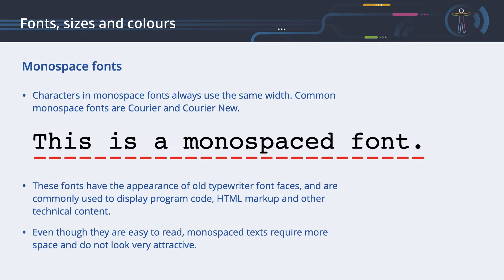Characters in monospace fonts always use the same width. Even characters that might seem to require different widths, such as an uppercase W and a lowercase I, occupy the same width. Common monospace fonts are Courier and Courier New. These fonts have the appearance of old typewriter font faces and are commonly used to display program code, HTML markup, and other technical content. Even though they are easy to read, monospace text requires more space and does not look very attractive.